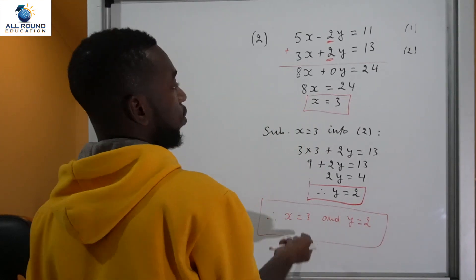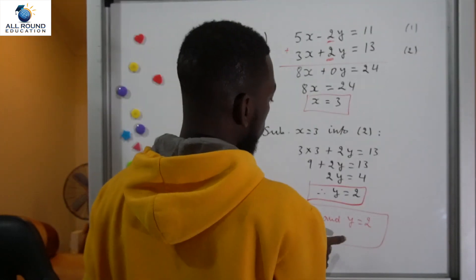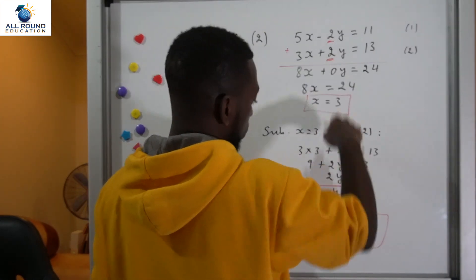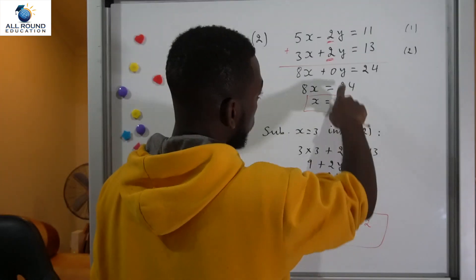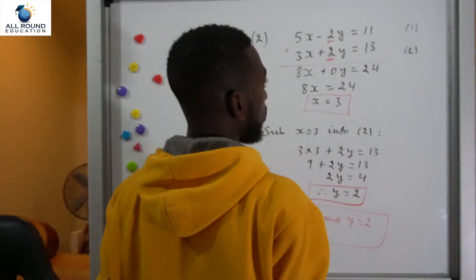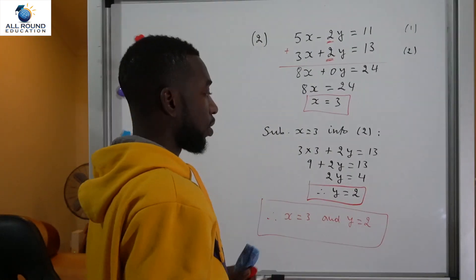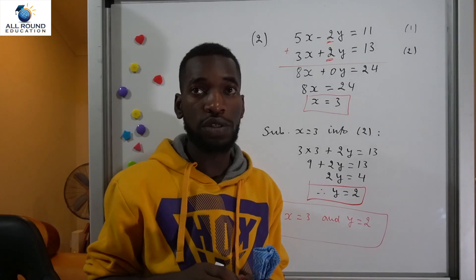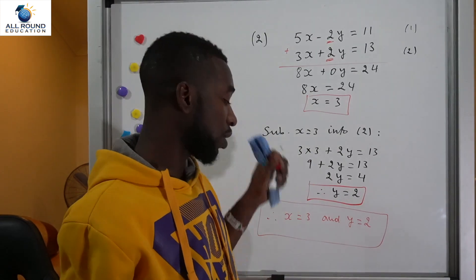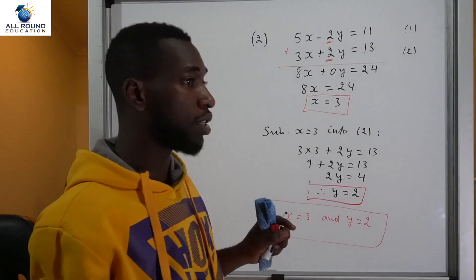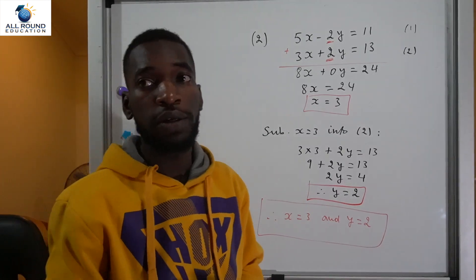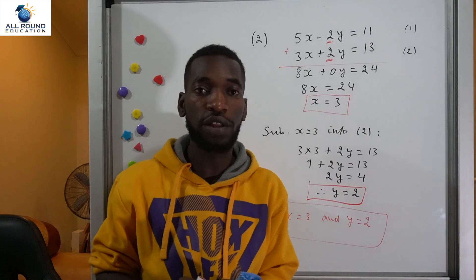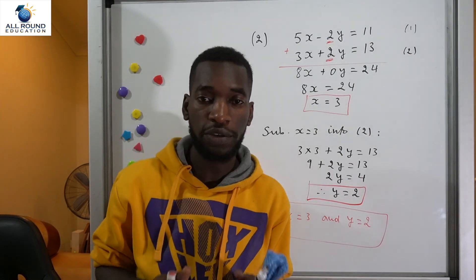You can check by substituting: 3 times 3 is 9, plus 2 times 2 is 4, giving 13 — which matches. Thank you so much for watching. We solved simultaneous equations using the elimination method. Like, share, comment, and remember to subscribe to our channel if you haven't done so. See you in the next video!